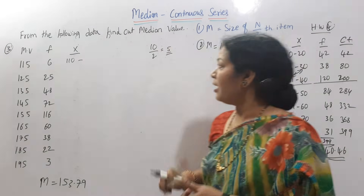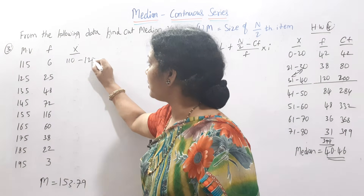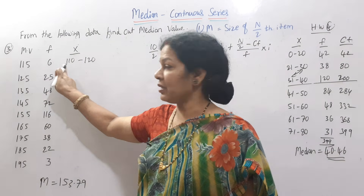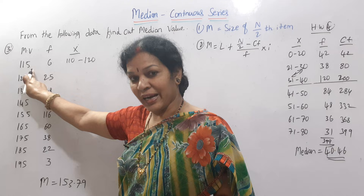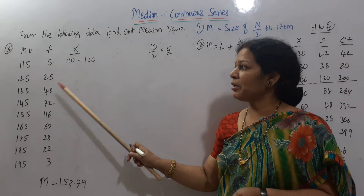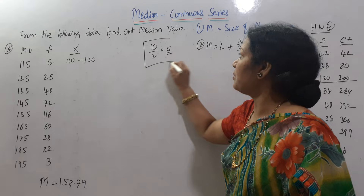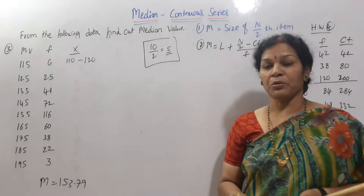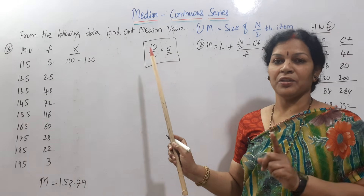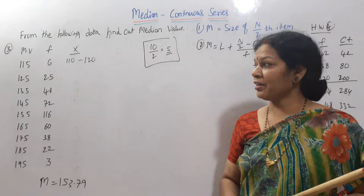So if we add 5, it is the upper class interval. The upper class interval is 120. It means that the 5 is minus — 15 is minus, the lower class interval is 15. The difference is 10, divided by 2 is 5. If we minus this it is the lower class interval. If we add this it is the upper class interval.